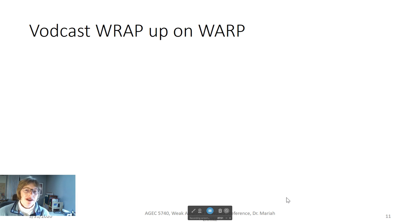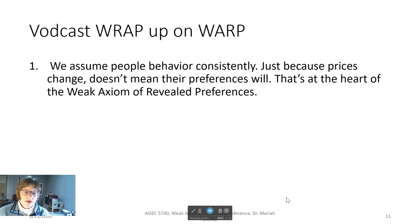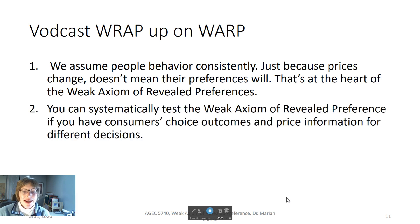The most important points to remember from this vodcast are: we assume people's behavior is consistent. Just because prices change doesn't mean their preferences do. That's the heart of the weak axiom of revealed preference, or WARP. And also, you can systematically test the weak axiom of revealed preference if you have consumer's choice outcomes and price information for different decisions.